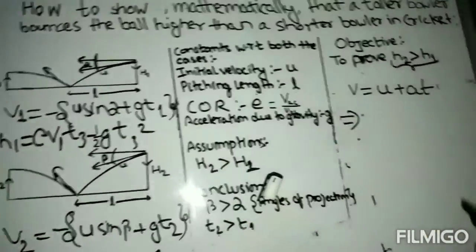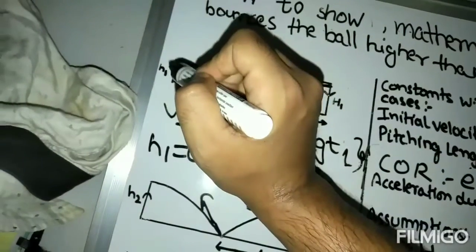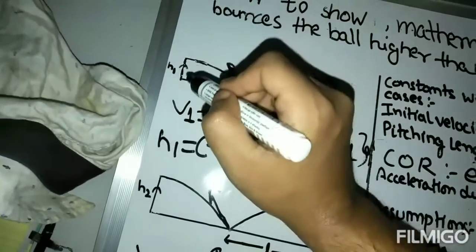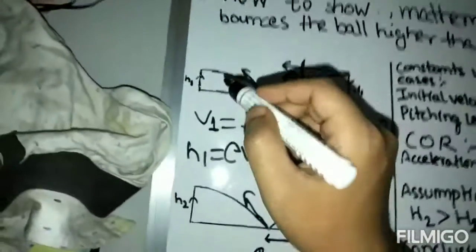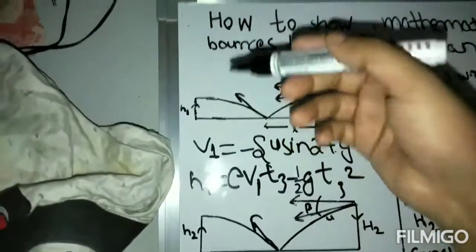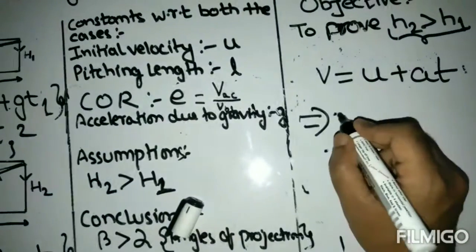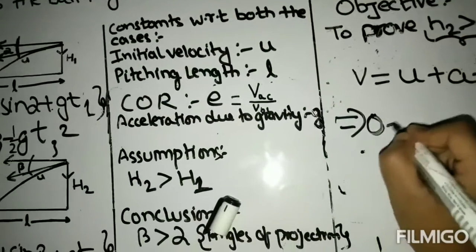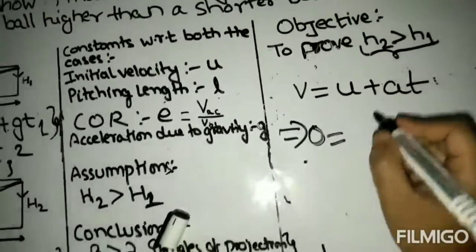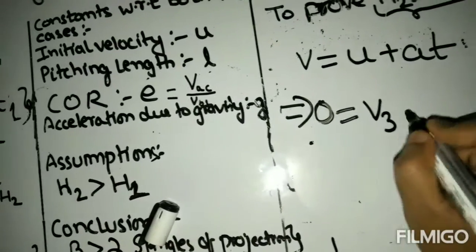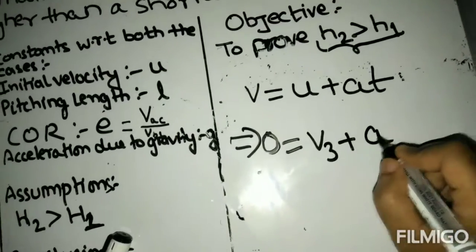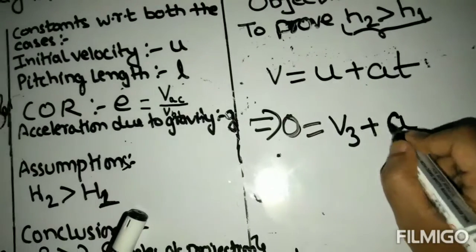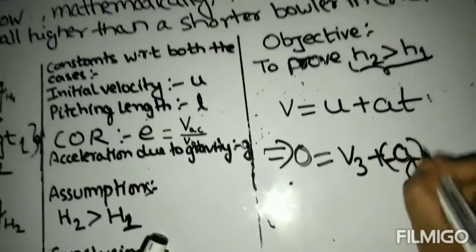So let's consider case one. Here, since the ball has reached its maximum bounce, the velocity, I mean the upward velocity or you can say the vertical component of the velocity, will be zero. Which will be equal to u. You already have derived u. U will be v3 plus, sorry, a is nothing but minus g.